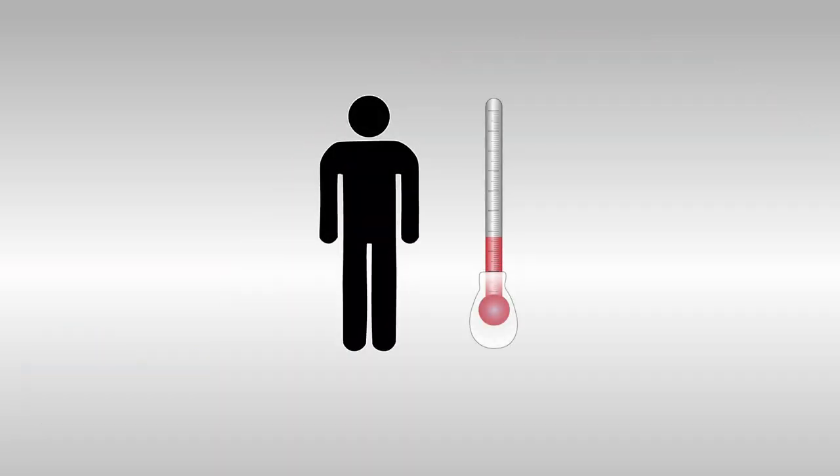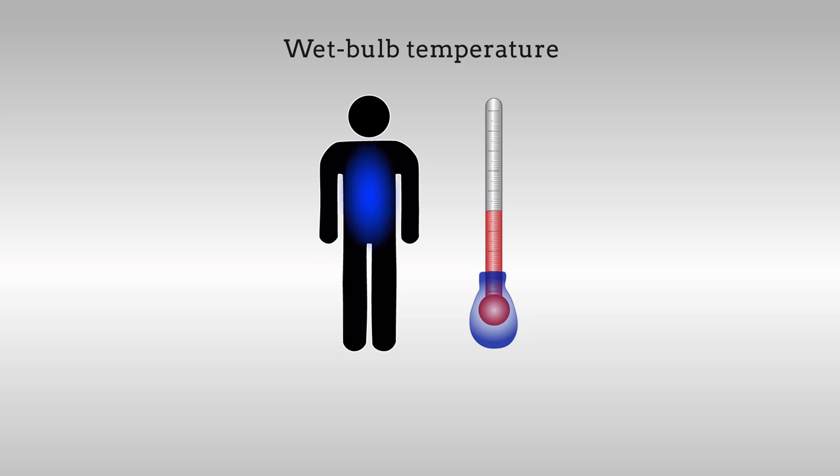The upper temperature limit of the human body is expressed in terms of the wet bulb temperature. The wet bulb temperature is the lowest temperature air can be cooled to by evaporating water into it until it can't hold any more water vapor. The wet bulb temperature therefore provides a measure of how well the body can cool itself by sweating.